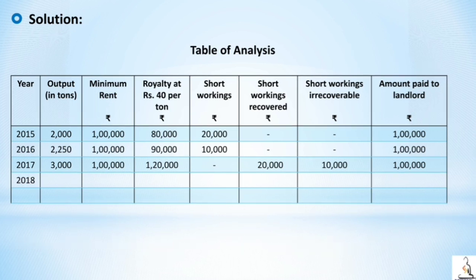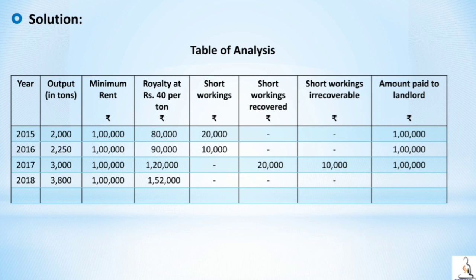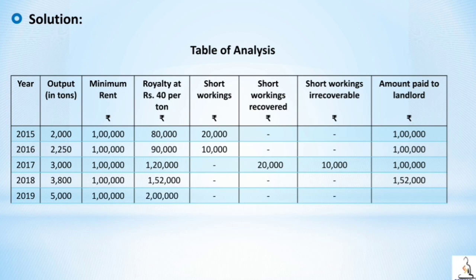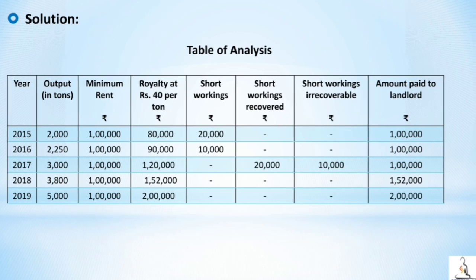In 2018, output is 3800 tons, minimum rent is 1 lakh, and royalty is 3800 × 40 = 1,52,000. Royalty exceeds minimum rent, so there is no short working, no short working recovered, and no short working irrecoverable. Royalty becomes payable. In 2019, output is 5000 tons, minimum rent is 1 lakh, and royalty is 5000 × 40 = 2 lakh. Again, no short working of any kind — royalty is payable at 2 lakh. This completes the table of analysis for the first problem.